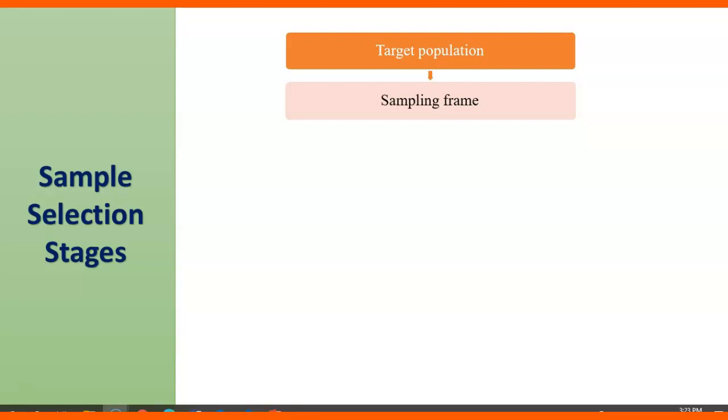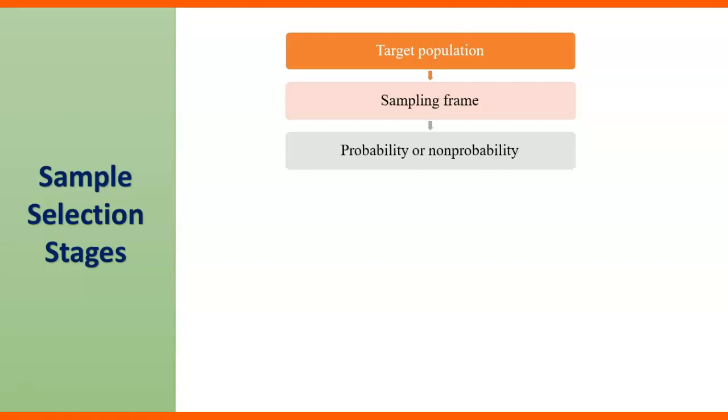We can say that individuals, organizations, households, offices, or any other item. The third step is probability or non-probability techniques.